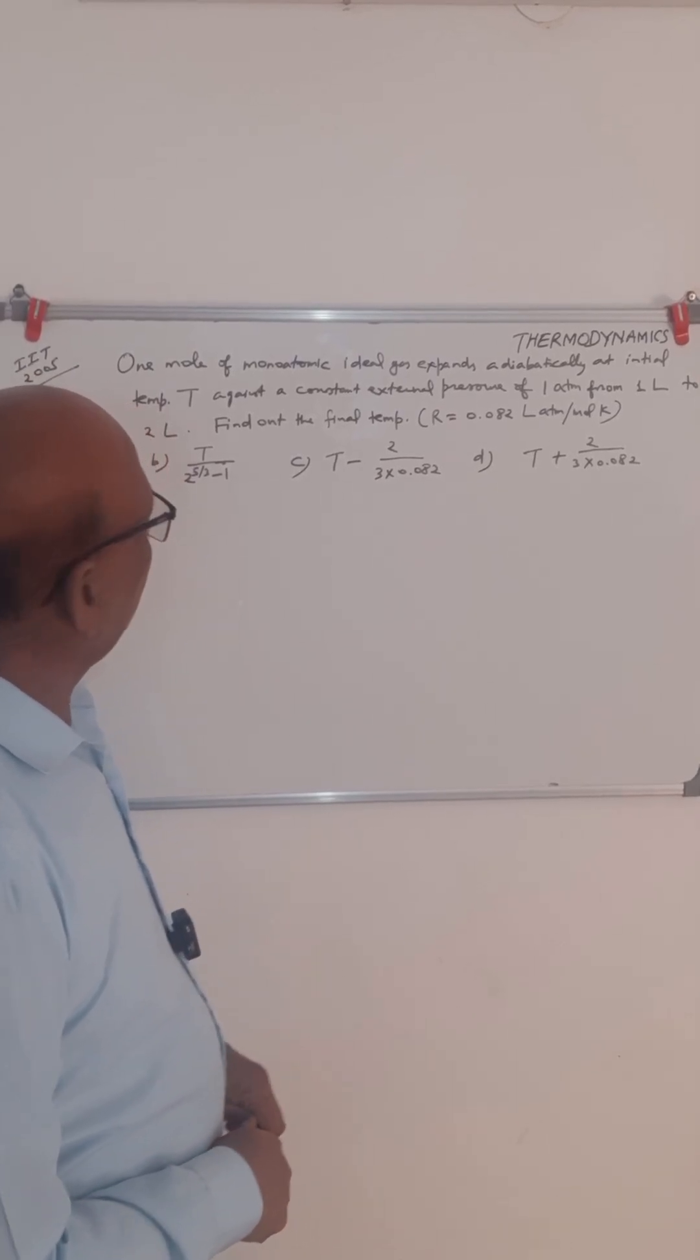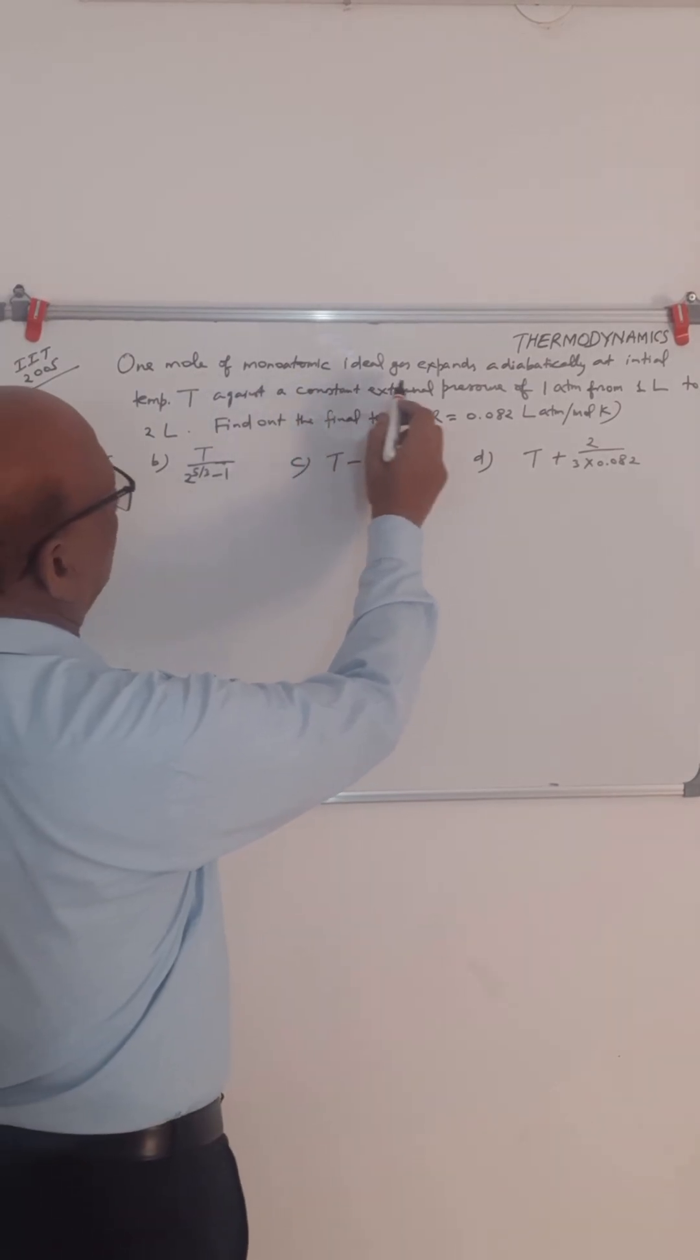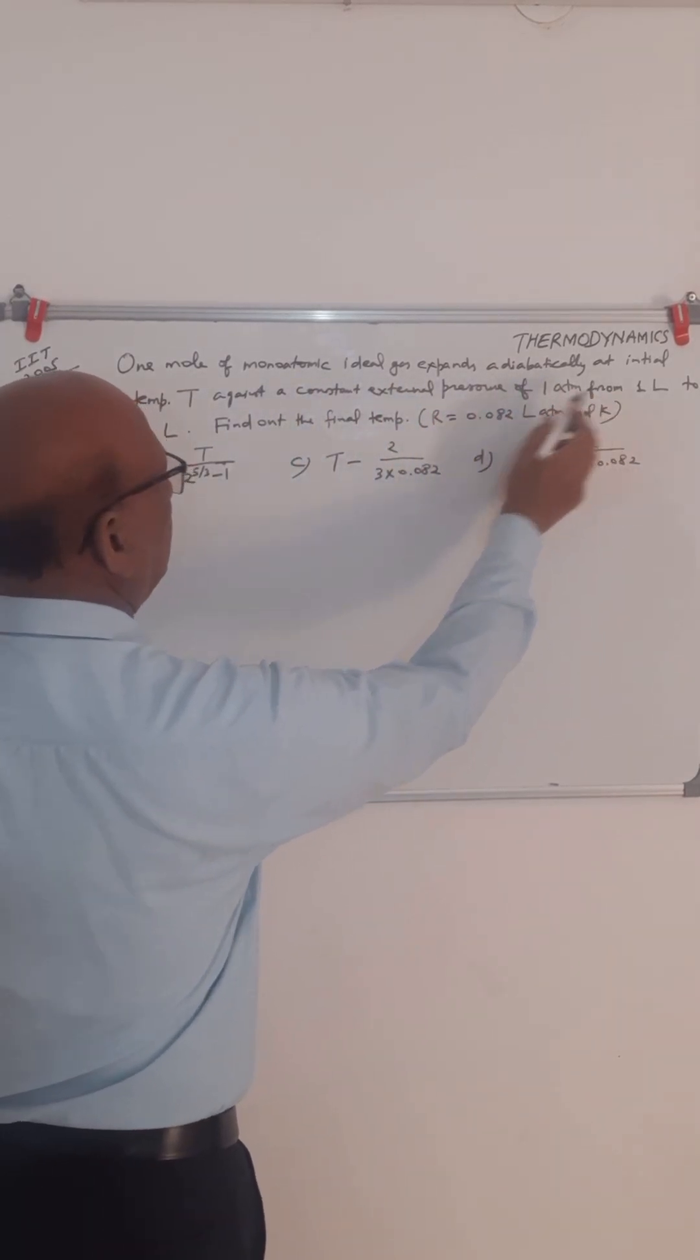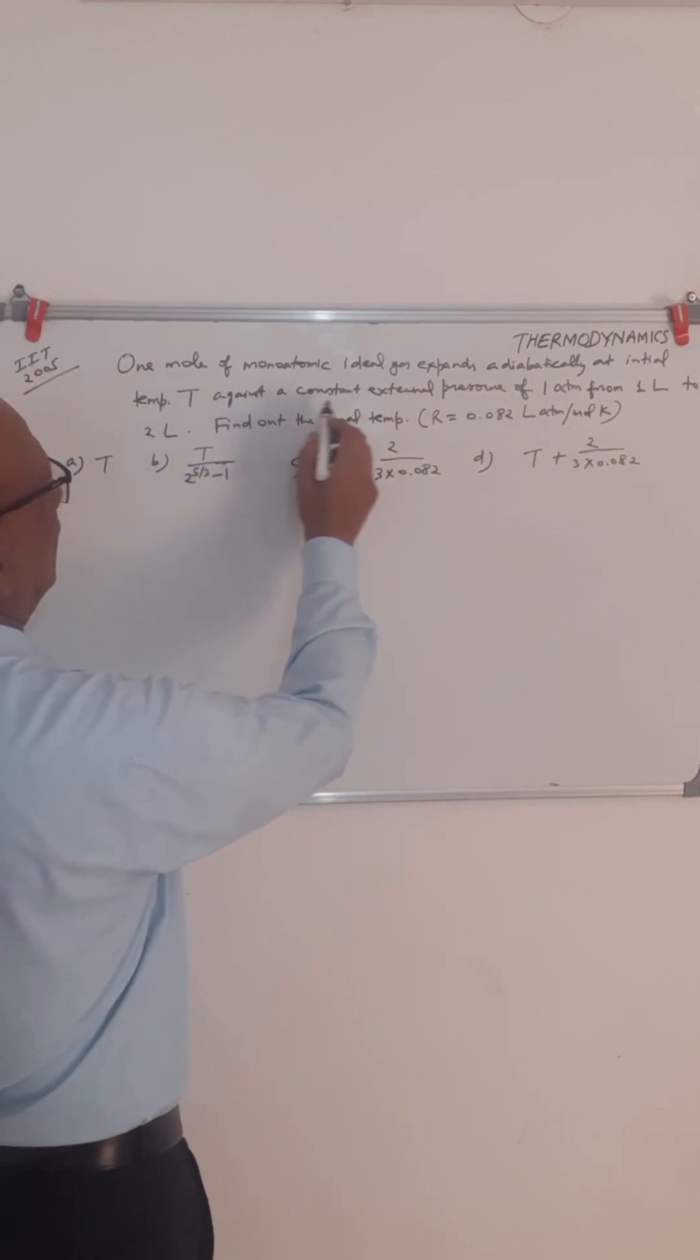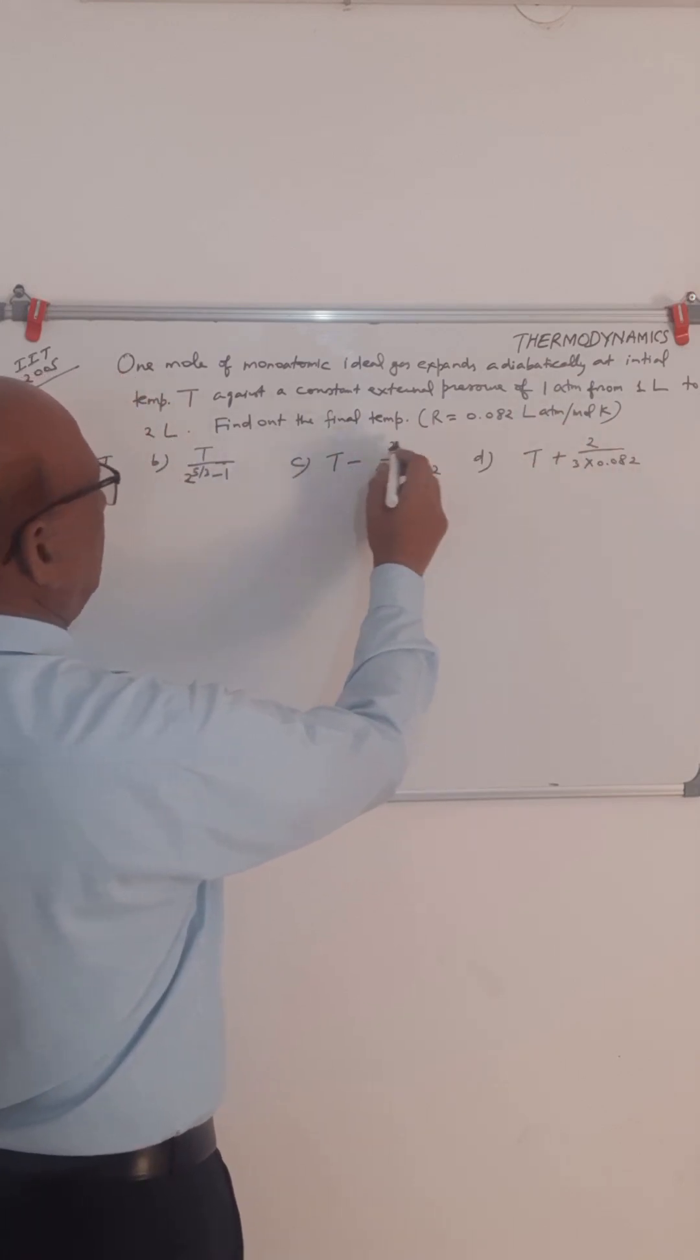This question related to thermodynamics was asked in IIT 2005. One monoatomic ideal gas expands adiabatically at initial temperature T against a constant external pressure of 1 atmosphere from 1 liter to 2 liters. Find out the final temperature.